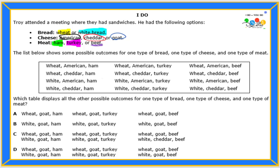The list below shows some possible outcomes for one type of bread, one type of cheese, and one type of meat. Which table displays all the other possible outcomes for one type of bread, one type of cheese, and one type of meat? So, all the other possible outcomes.